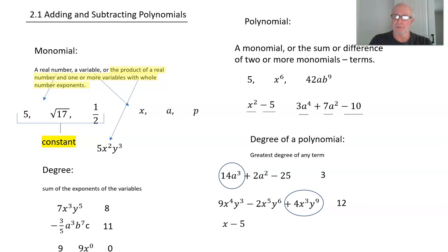Now try this one: what is the degree of x minus 5? If you said 1, you're correct. x has an exponent of 1, so the degree of this polynomial is 1.